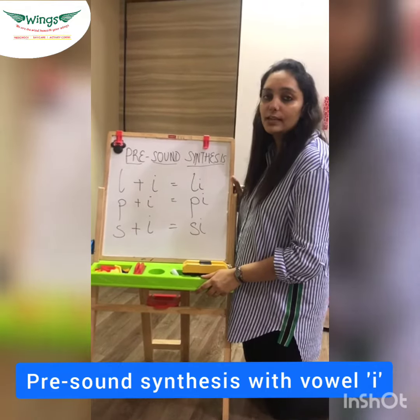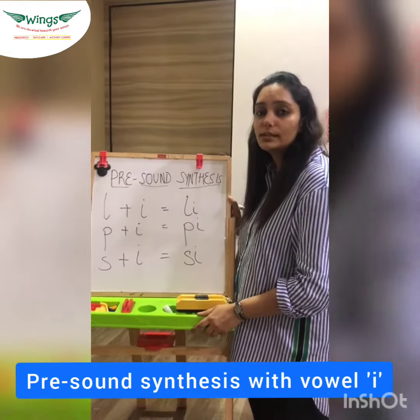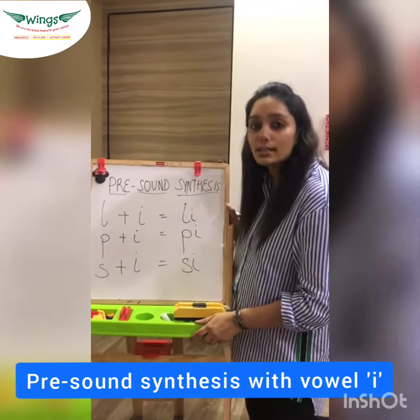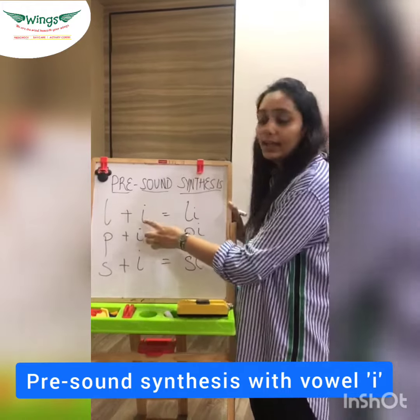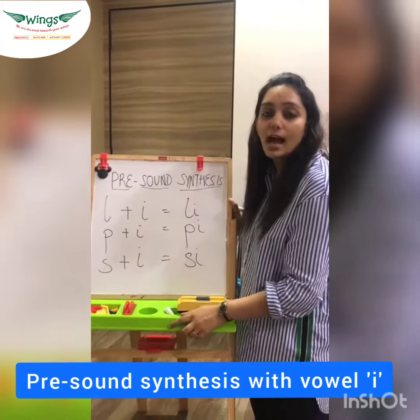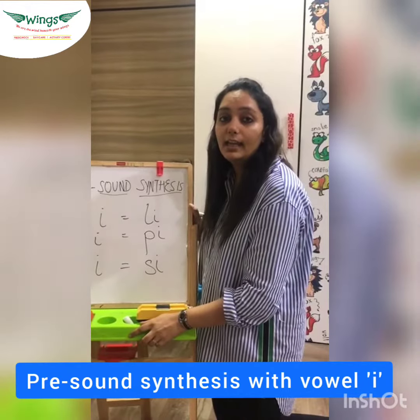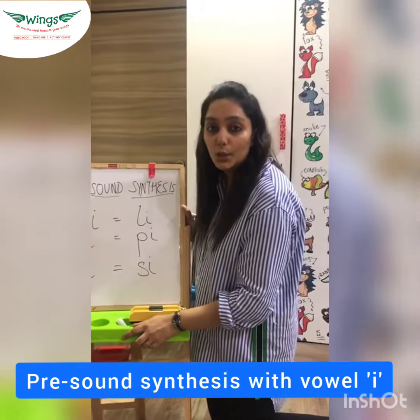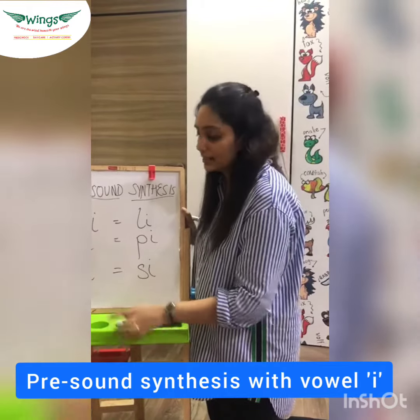Good evening, children. Now we are doing the pre-sum synthesis with the last vowel which is left, that is I. I says I. I-I igloo. I-I insect.